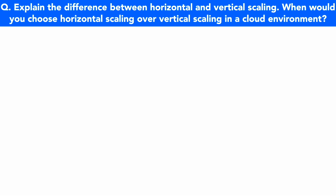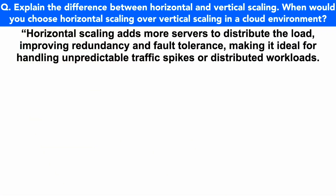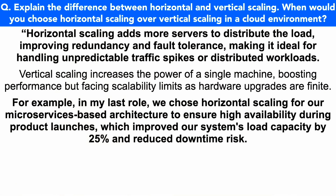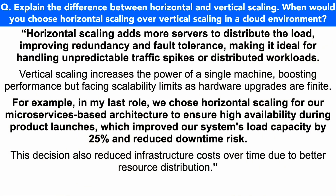Horizontal scaling adds more servers to distribute the load, improving redundancy and fault tolerance, making it ideal for handling unpredictable traffic spikes or distributed workloads. Vertical scaling increases the power of a single machine, boosting performance but facing scalability limits as hardware upgrades are finite. For example, in my last role we chose horizontal scaling for our microservices-based architecture to ensure high availability during product launches, which improved our system's load capacity by 25% and reduced downtime risk. This decision also reduced infrastructure cost over time due to better resource distribution.